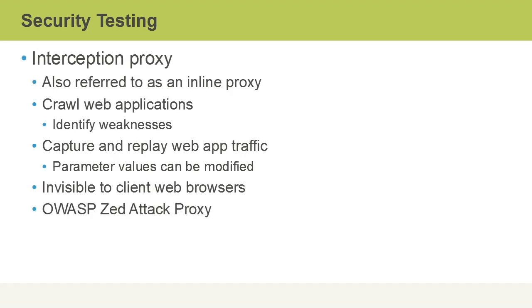Interception proxies, such as the Burp Suite, can also be used as part of security testing. This is also called an inline proxy, and it's used to crawl a web application — in other words, to pore over it looking for weaknesses. The interception proxy also has the ability to capture and replay web-specific traffic for an application, where parameter values can be modified. This is really akin to a man-in-the-middle attack, but it's part of testing. The Burp Suite toolkit also allows the creation of custom attacks in order to observe application behavior. We have to account for the fact that there are malicious users that will perhaps attempt these types of attacks, and we have to think in the same way. Interception proxies, however, are invisible to client web browsers.